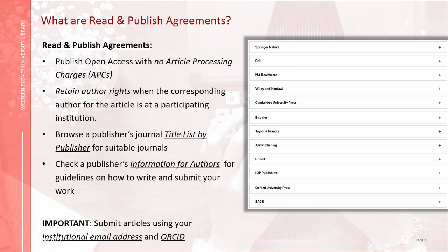Earlier I touched on Read and Publish Agreements, which come under open access publishing fee support available to Western Sydney University corresponding authors publishing open access. With Read and Publish Agreements, articles are immediately available open access upon publication, and authors retain the rights to their work. If you have special requirements for publishing, for example colour pages, check with the publisher if this is an additional cost. For 2023, there are 12 Read and Publish Agreements available. You will find these listed by the publisher on the library homepage under the researchers menu, under the Open Access Publishing fee support, for a link to the Read and Publish Agreements page.